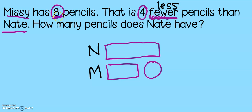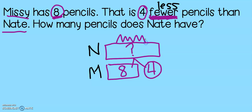Let's go ahead and plug in our numbers. Missy has eight pencils — M for Missy, let's put in our eight. Then we have four fewer. If you remember from our previous lesson, any number with more or fewer goes in the circle. That means Nate has more, and we need to find out how many more he has.